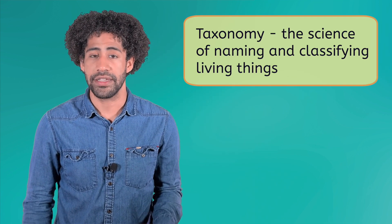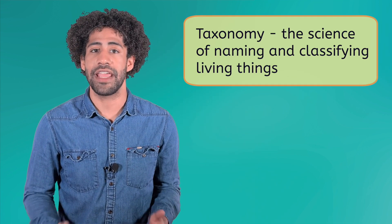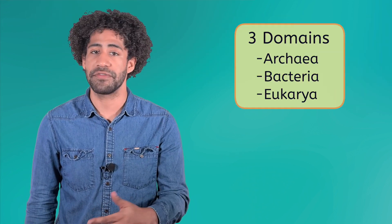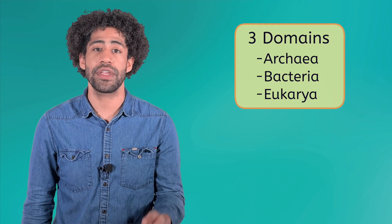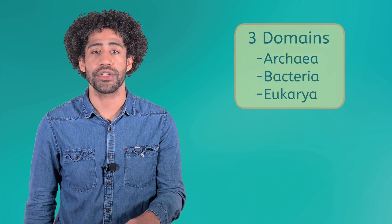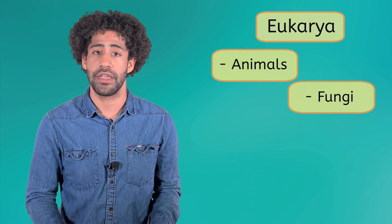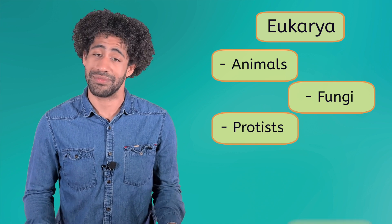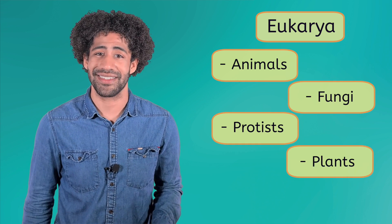In our last lesson, we learned that taxonomy is the science of naming and classifying living things. Life is divided into three large domains, one of which is eukarya, and within this domain there are four kingdoms. And one of those kingdoms is, you guessed it, plants.